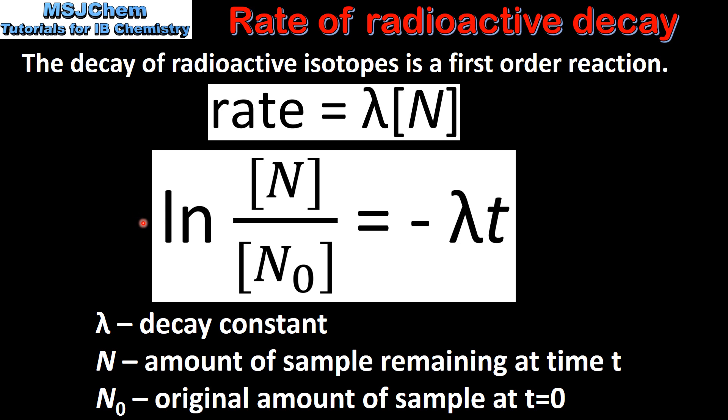Here we have the integrated form of the rate equation, where lambda is the decay constant, n is the amount of sample remaining at time t, and n0 is the original amount of sample at time equals 0.